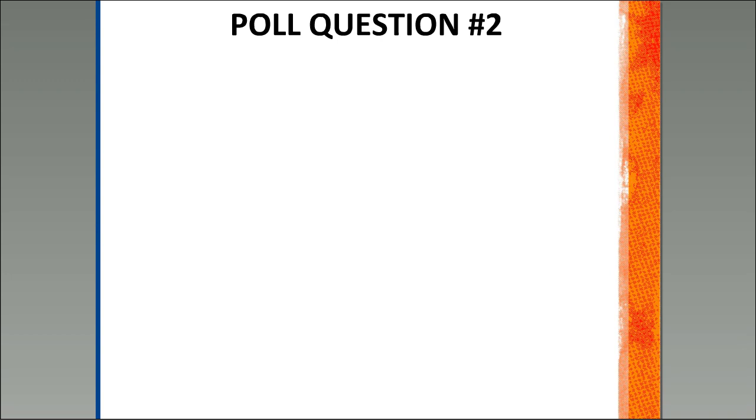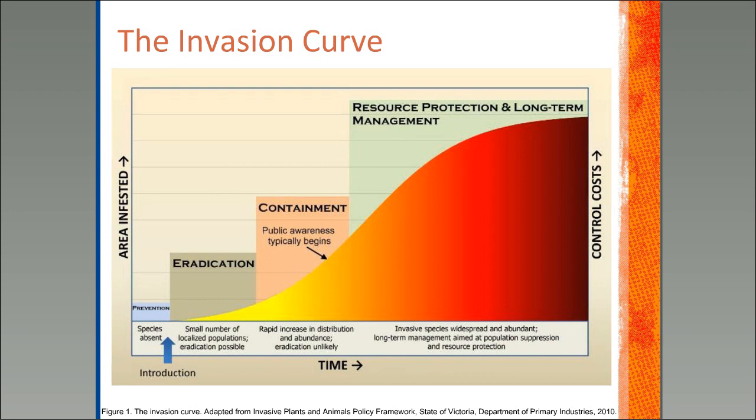The invasion curve is a neat tool for thinking about invasive species management. It's based on a framework from Australia, and it basically shows that eradication of an invasive species becomes less likely and control costs increase as invasive species spread over time. I'm going to work through each section of the invasion curve and try to make sense of what this means to us as homeowners.